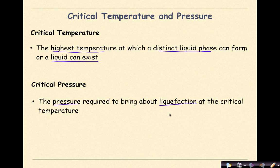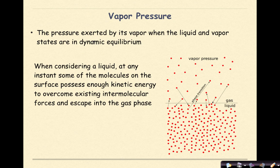Critical pressure is defined as the pressure required to bring about liquefaction at a critical temperature. Liquefaction meaning the formation of a liquid. Vapor pressure is the pressure exerted by its vapor when the liquid and vapor states are in dynamic equilibrium. When considering a liquid, at any instant, some of the molecules on the surface possess enough kinetic energy to overcome existing intermolecular forces and escape into the gas phase.